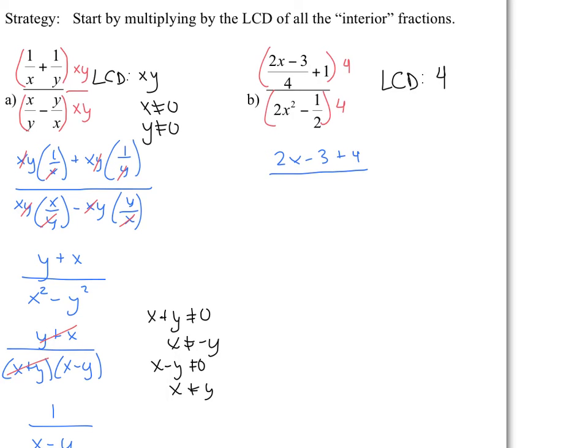On the denominator, this 4 multiplies the 2x squared. So you get 8x squared. And then when you multiply the 4 times the half, that gives you 4 divided by 2 is 2. 2 times 1 is negative 2. And from this point on, we're just going to simplify and factor as much as we can. So notice that we can simplify the numerator to 2x plus 1. And on the denominator, we can actually factor a common factor of 2, which would give us 4x squared minus 1.